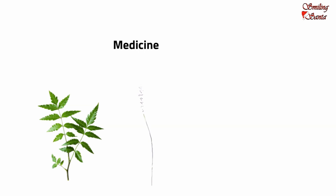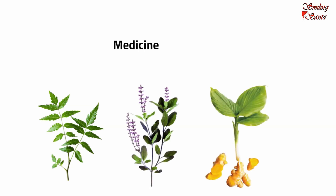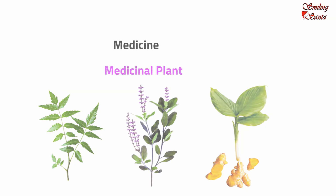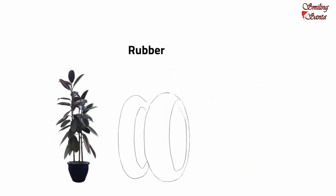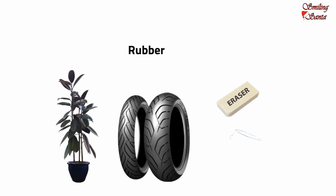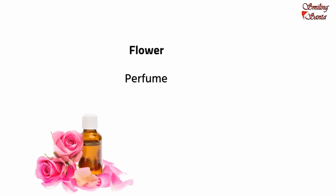Do you know? Many medicines are made from plants like neem, tulsi, and turmeric. These plants are called medicinal plants. Plants also give us rubber. Rubber is used for making tires, erasers, rubber bands and tubes. Flowers of plants are used to make perfume, like rose, jasmine and lavender.